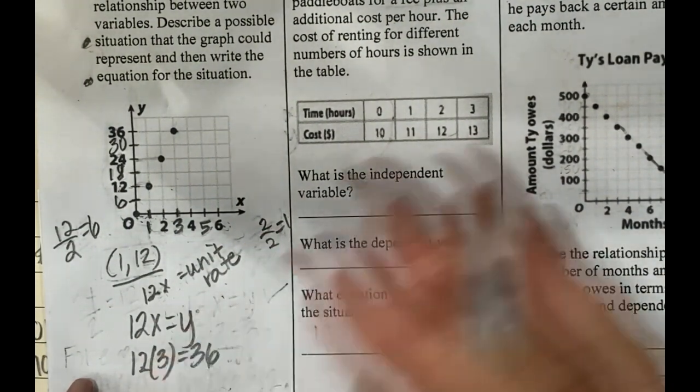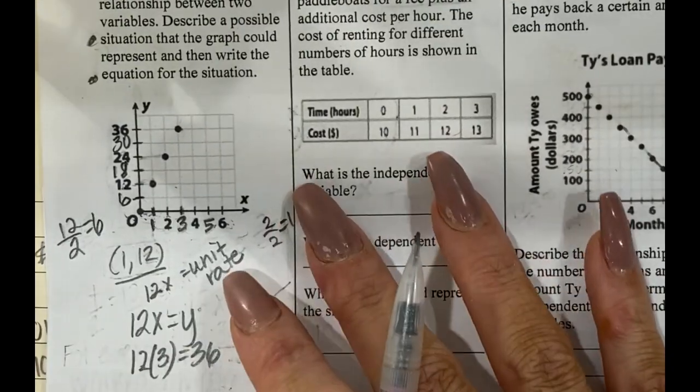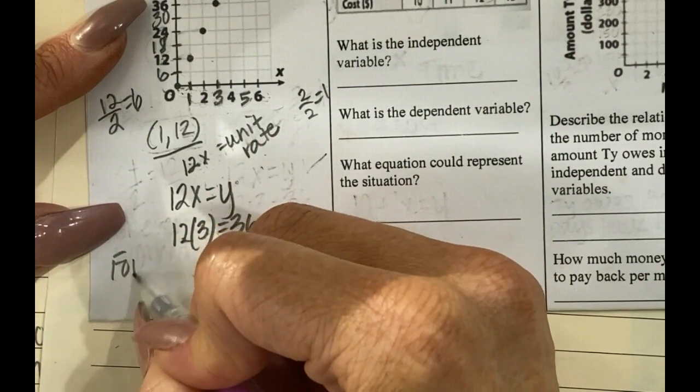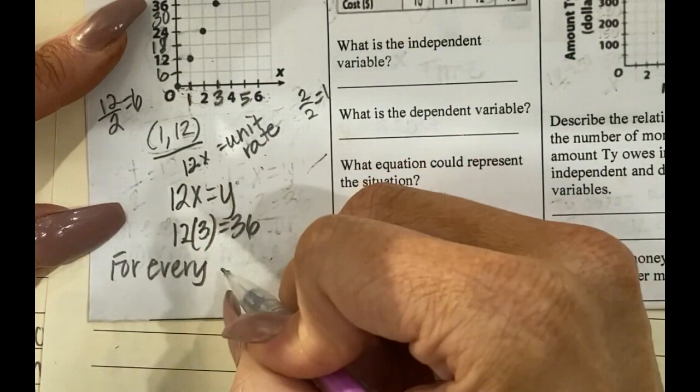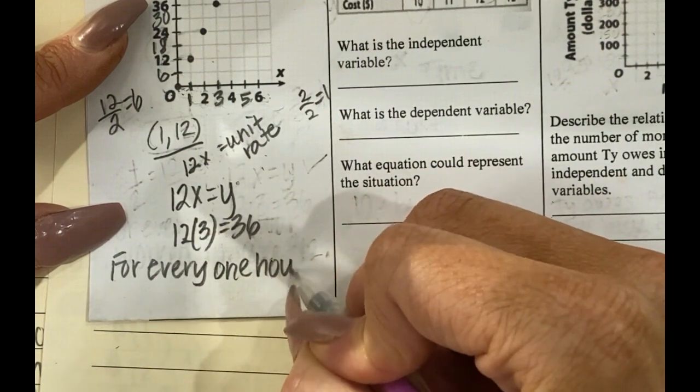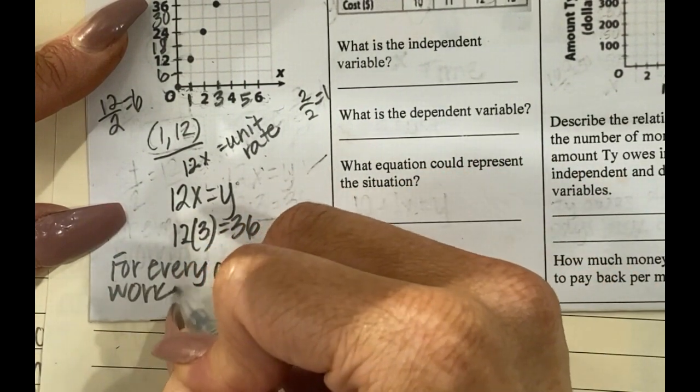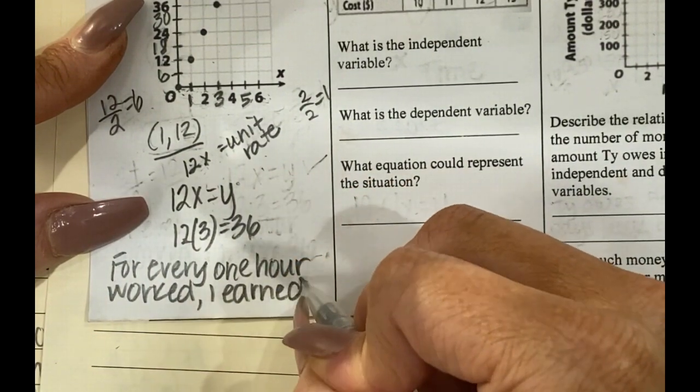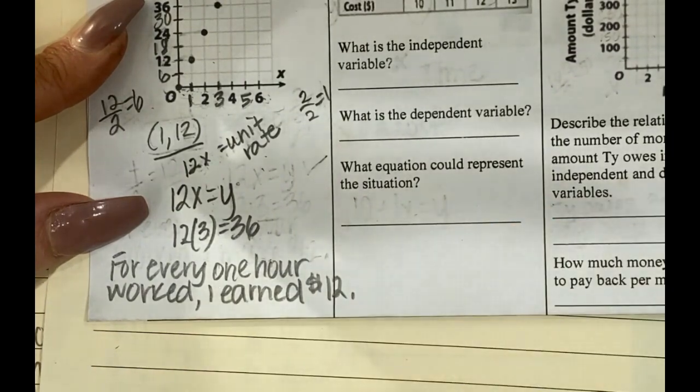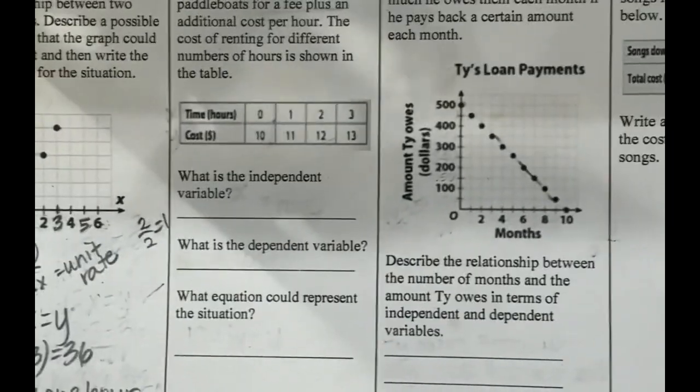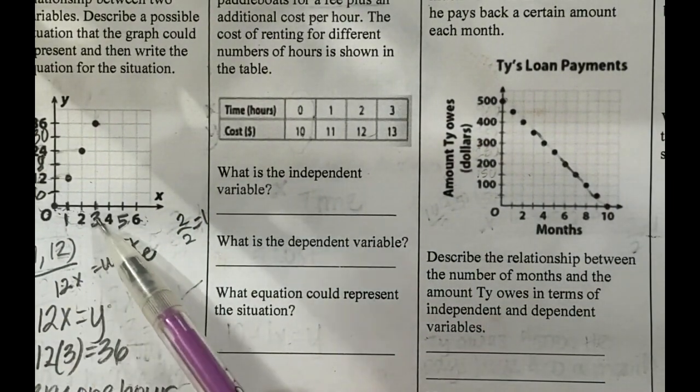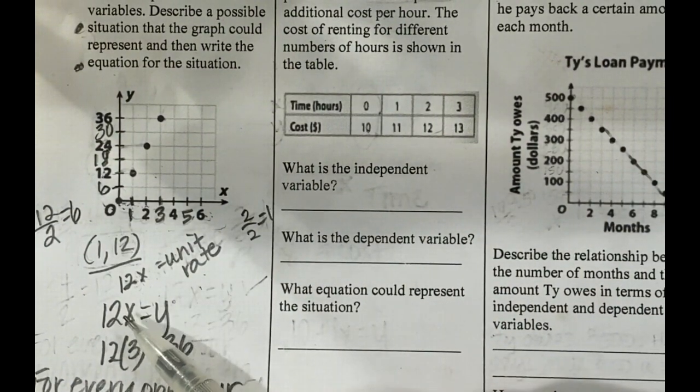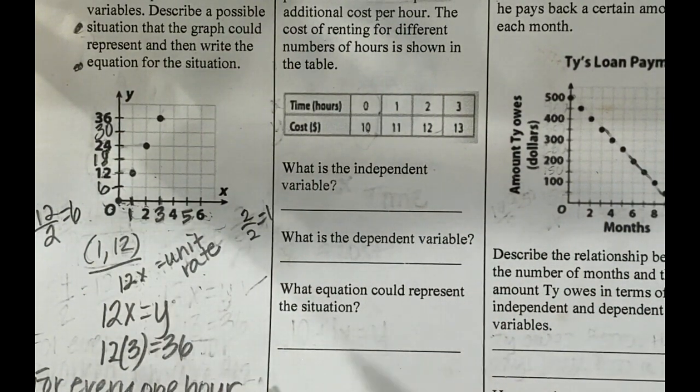So a possible scenario for that could be, let's see, what if I said for every one hour worked, I earned $12. I could also say that for every three hours, I earned $36 because that would be, that would end up being the same ratio. So it would end up being a one to 12.